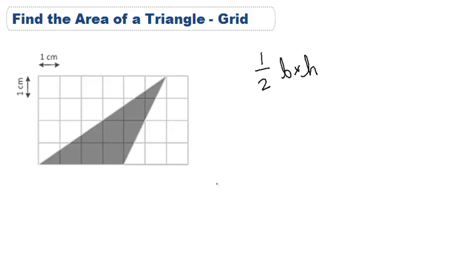Because we're in a grid, it's relatively easy to find our base and our height. We just count the lines. So here our base is 1, 2, 3, 4 and each box represents a centimeter.